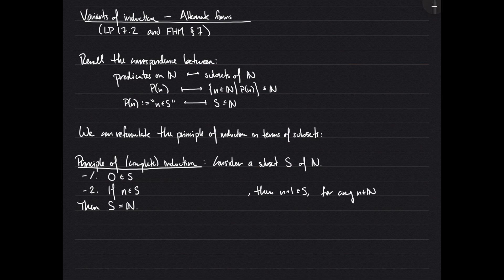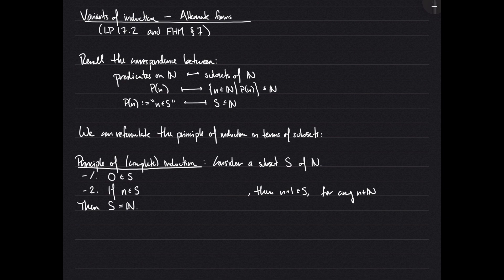If we can prove those two things, then we can say S equals N. This should make sense on its own: if 0 is in S, and for any element in S the next element is also in S, then all natural numbers are in S — because 0 is in S, then 1 is in S, then 2 is in S, then 3, 4, 5, and so on. So knowing steps 1 and 2 means S contains every natural number, and since S is a subset of N to begin with, S equals N.